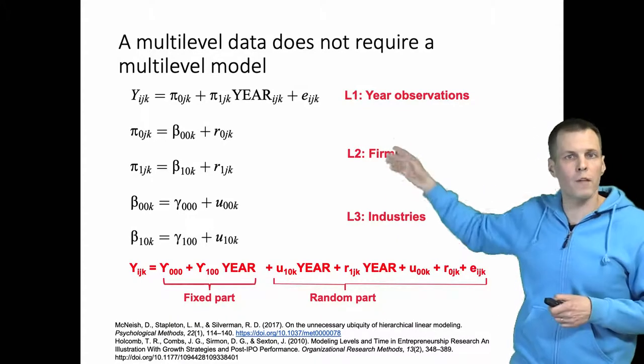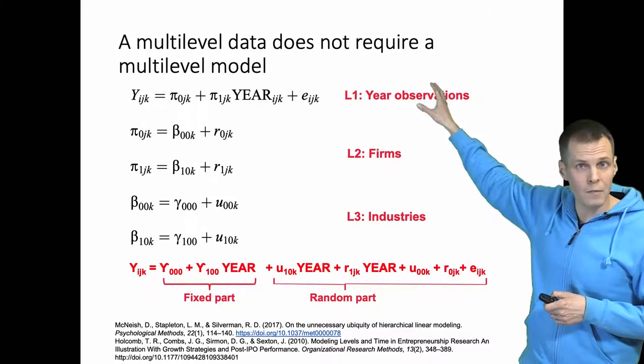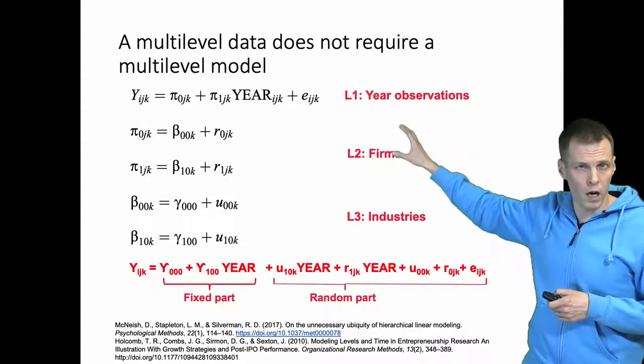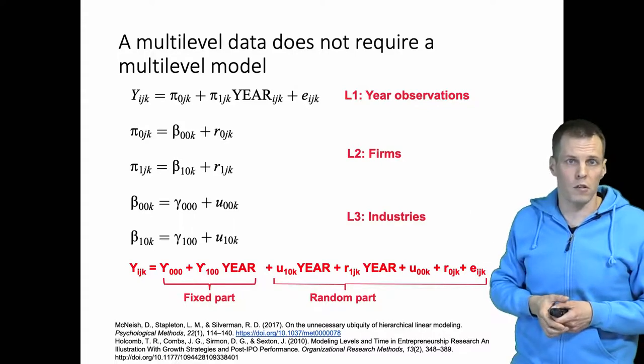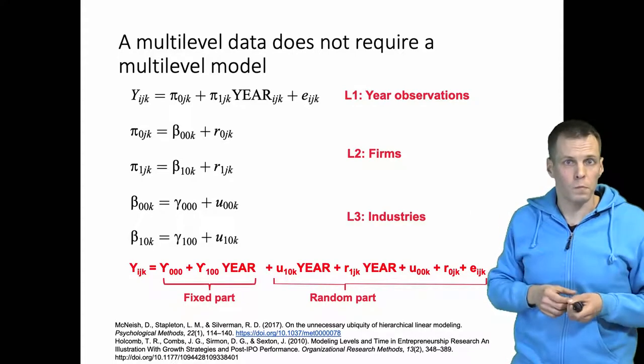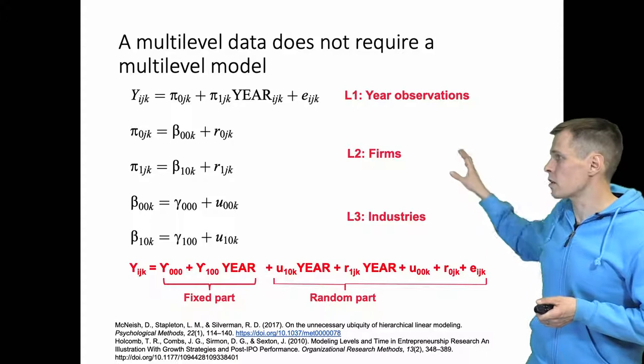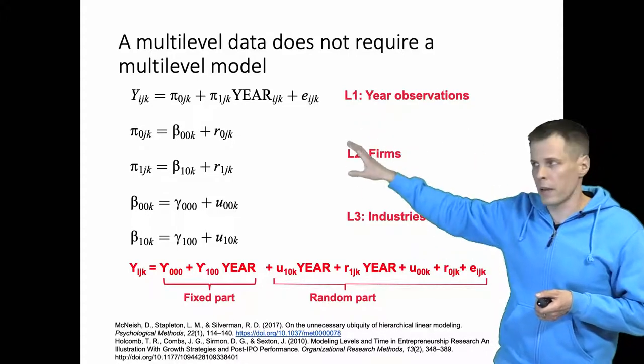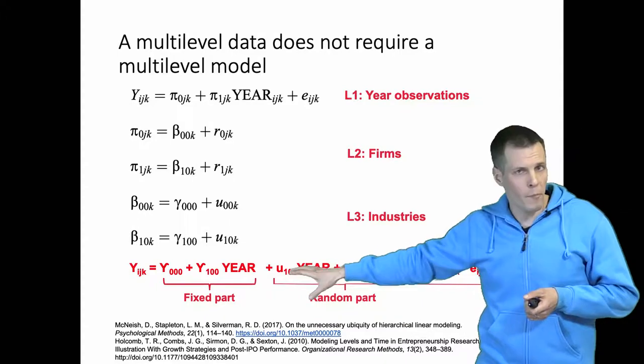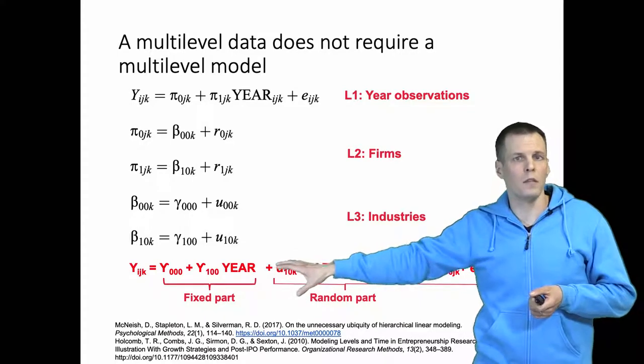For example if level one was investments, level two would be startups, level three would be venture capitalists, then that kind of cross structure would be useful. In the nested structure here the multilevel model can be expressed in a mixed model. So we have the fixed part and the random part.